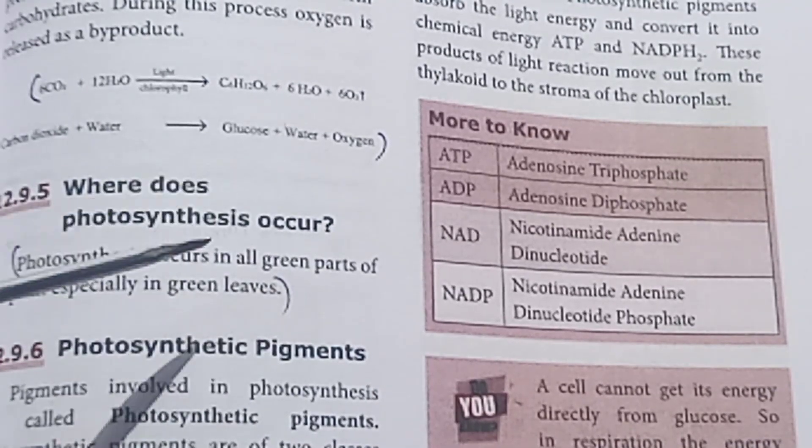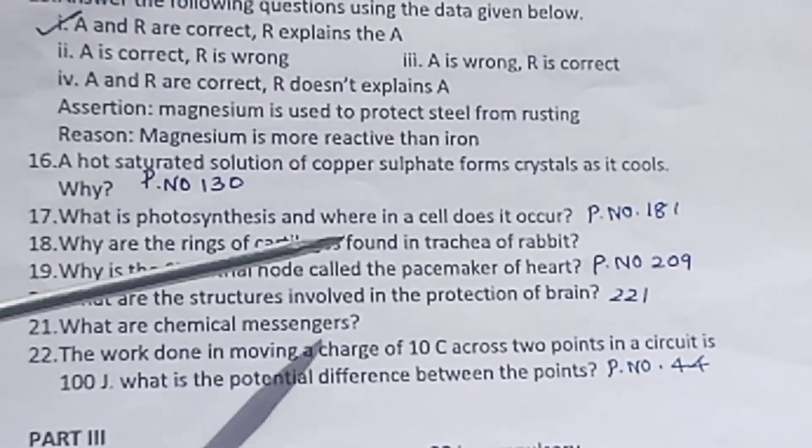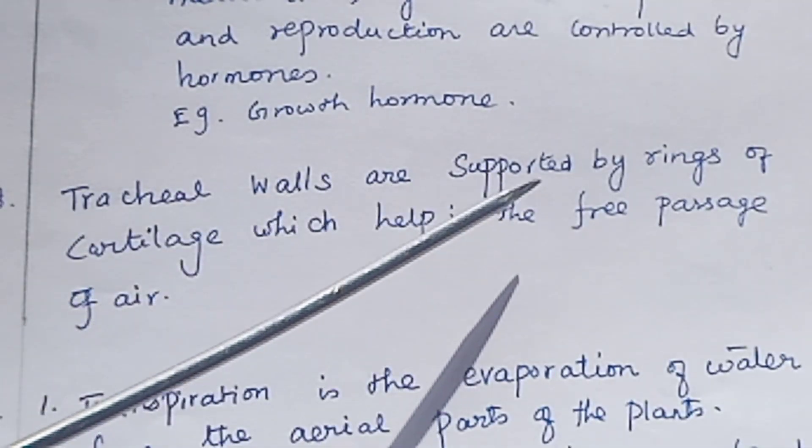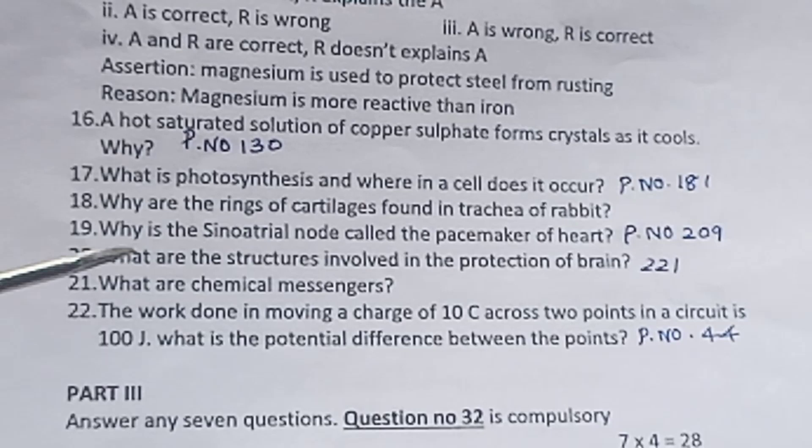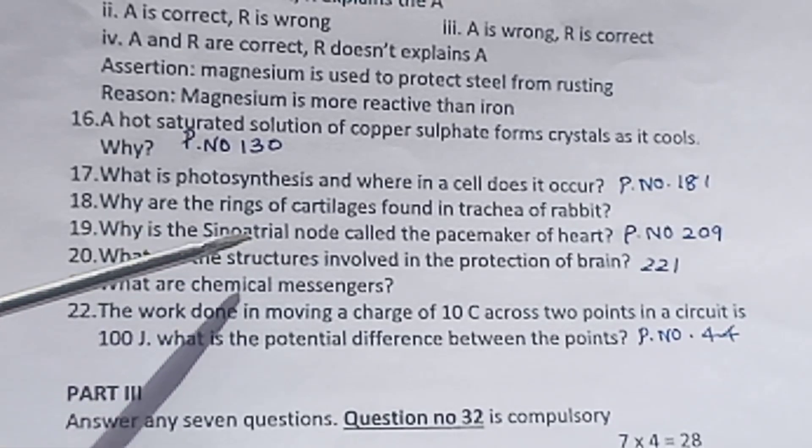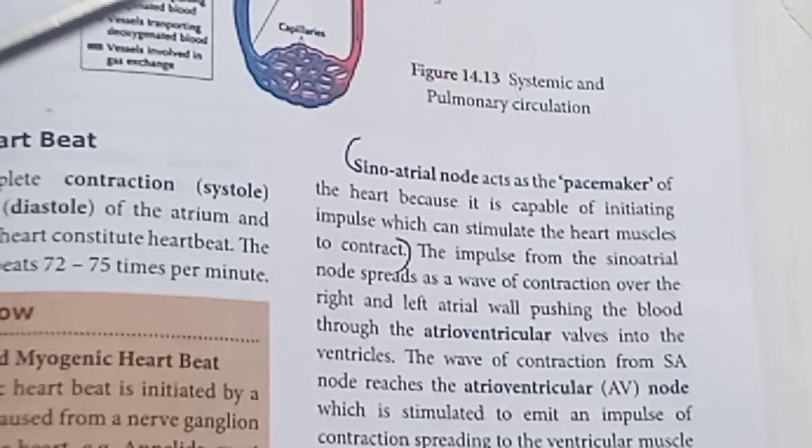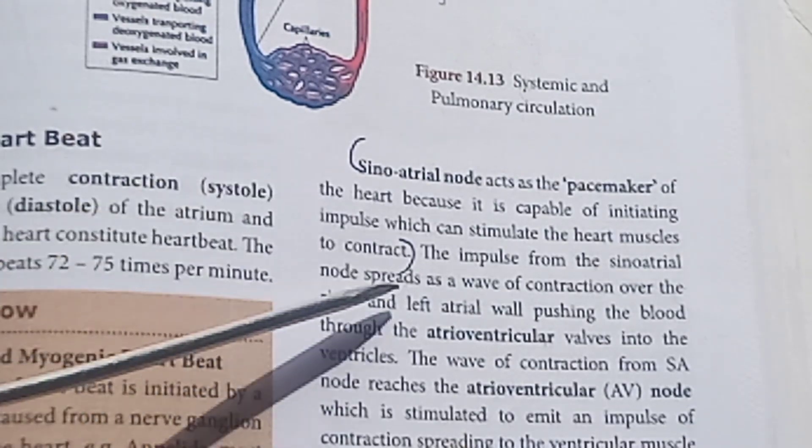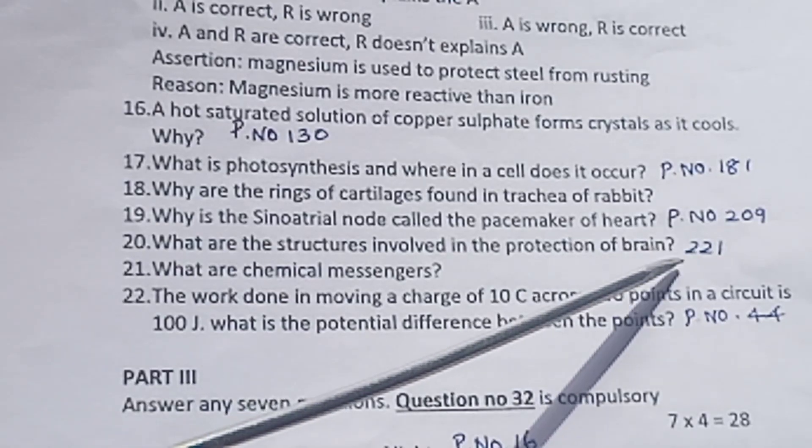Very important question from May 2022. Question 18: Why are the rings of cartilage found in trachea of rabbit? Trachea walls are supported by rings of cartilage which help in the free passage of air. Question 19: Why is the sinoatrial node called the pacemaker of heart? Page number 209. Question 20: What are the structures involved in the protection of brain? Page number 221.